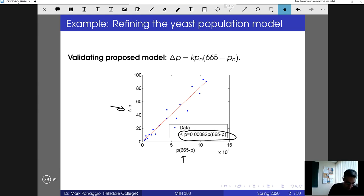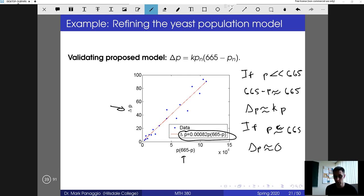A couple other things to note. Notice that in the early stages, if p is much less than 665, then the term 665 minus p is approximately just 665. If p is really small, we can sort of throw that term away, which means delta p is still k times p, which is what we started with. So this model actually incorporates the original model, but it only uses that relationship when p is small. But when p is large, close to 665, then delta p is approximately zero. So the growth would slow down, and that's why we see this asymptotic behavior.